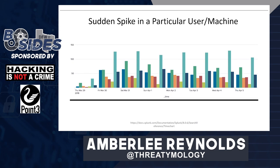A sudden spike in traffic from a particular user or machine — after baselining what is normal — can indicate not only an infection but that somebody is trying to exfiltrate data. This can also indicate an insider threat: an employee with malicious intent trying to send out data before being terminated. On the other hand, it can be a legitimate use, like a user backing up data. It's definitely worth asking the user not only what they were doing, but why, to rule out anything nefarious.